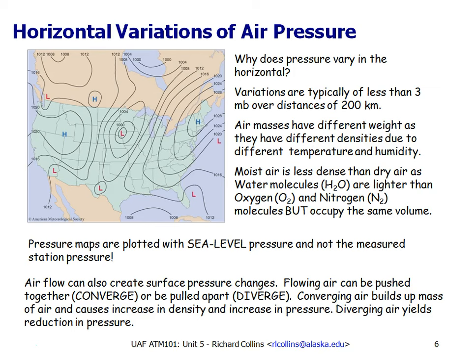In mapping pressure, we map the sea level pressure, not the recorded station pressure. The station pressures would show persistent low pressure over the Rocky Mountains that would have nothing to do with the weather, but everything to do with the altitude of the Rockies. For every 100 meters of elevation, we add 10 millibars to the measured station pressure to get the corresponding sea level pressure. We will see later in the course how changes in the horizontal pressure drive the winds.